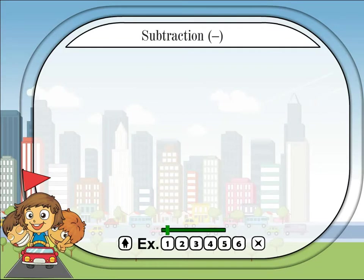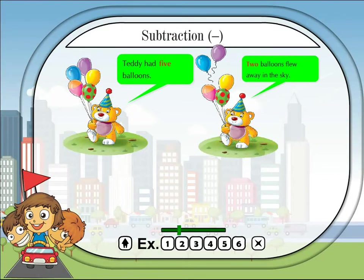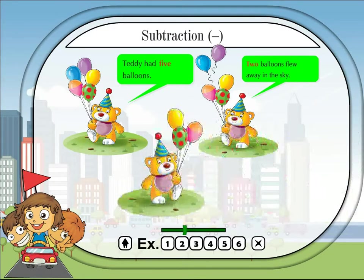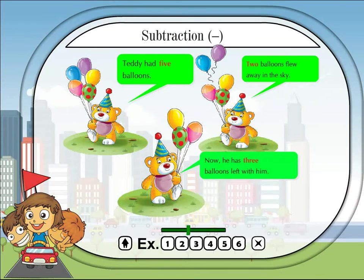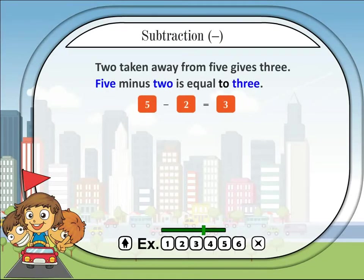Subtraction: Teddy had 5 balloons. 2 balloons flew away in the sky. Now he has 3 balloons left with him. 2 taken away from 5 gives 3. 5 minus 2 is equal to 3.